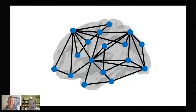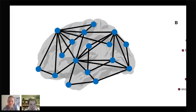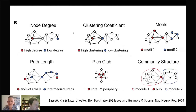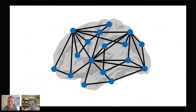Once we have structural connectivity represented as a network, we can ask questions about its organization — what topological properties does it have? We're very good at describing these properties. For instance, node degree is how many connections a node has; nodes with a high number of connections are known as hubs and are very important to overall brain functioning. We can also look at community structure, where groups of nodes are very densely connected amongst themselves.